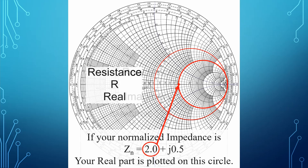What about the reactive part? The reactive part is plotted on these arcs, which are actually also circles — it's just that their center is way out in space somewhere. Each one is successively larger and larger, or going the other way, smaller and smaller. Everything north of the equator is inductive reactance, plus Jx. Everything south of the equator is capacitive reactance, or minus Jx.